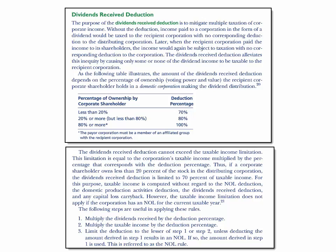Keep in mind the taxable income limitation does not apply if the corporation has an NOL for the current taxable year. Here are the steps to apply these rules. First, multiply the dividend received by the deduction percentage. Then multiply the taxable income by the deduction percentage. Then limit the deduction to the lesser of either step one or step two above, unless deducting the amount derived in step one results in an NOL. If so, the amount derived in step one is used — this is called the NOL rule.